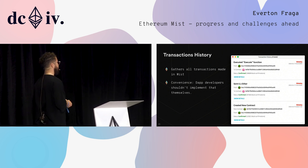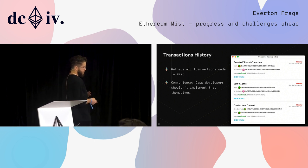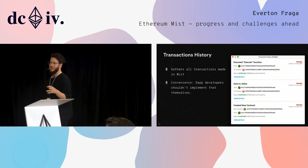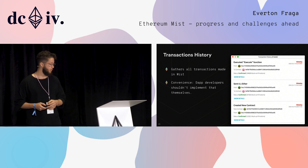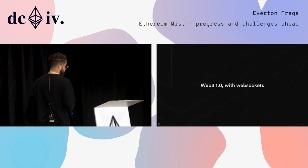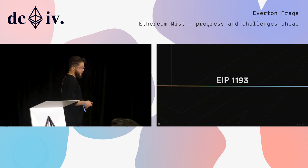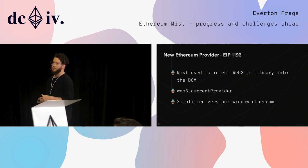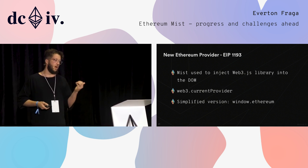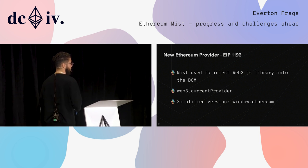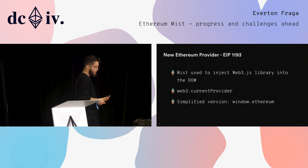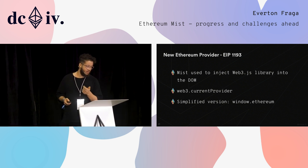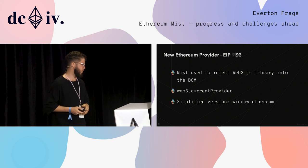We implemented a transaction history window which will gather all transactions made in the browser — pretty convenient for developers because they wouldn't have to implement that themselves within their websites. We're now using Web3 1.0 with WebSockets implemented, and there are some breaking changes to how we connect with websites. This is a coordinated effort: MIST used to inject Web3.js within the DOM, but we don't do that anymore. That's up to developers to choose which version they'll use. We now only provide window.ethereum, for simplicity's sake.